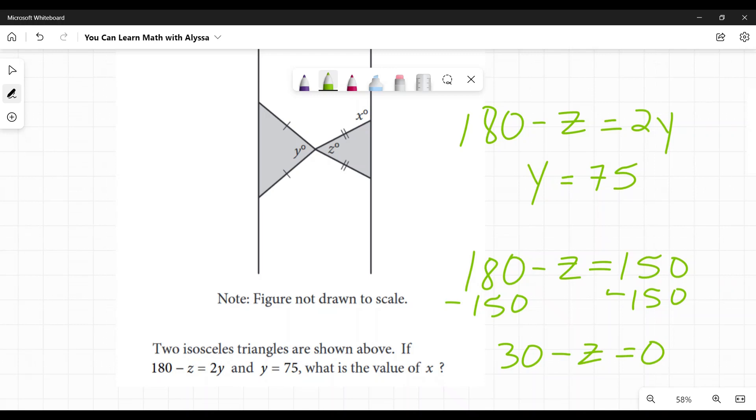So 30 minus what equals 0? 30. I can go through all the algebra steps, but that one, I just want you to think about that. Go, hmm, 30 minus what equals 0? 30, right? So Z equals 30.